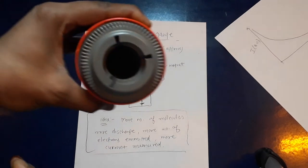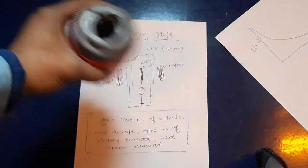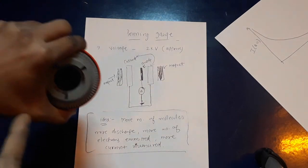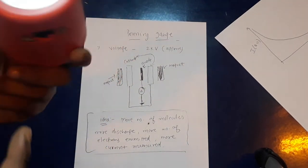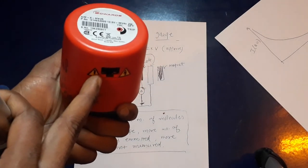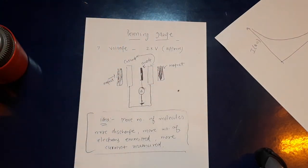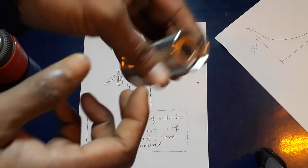I have opened an Edward Penning gauge. So this part is a permanent magnet and there is a provision to read the current and apply the voltage.